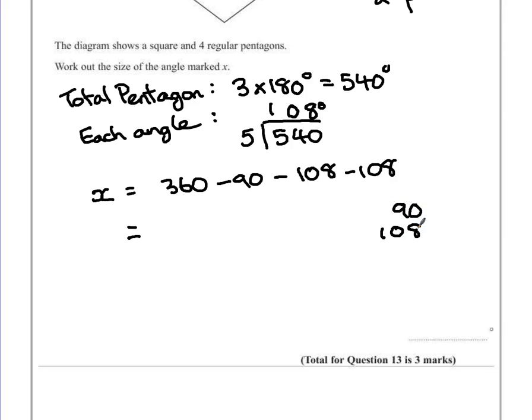So we have 90, 108 and 108. If we add those three values together, 8 add 8 is 16, 9 add 1 is 10. So we have 306 degrees, which technically means we have 360, take away 306, which leaves us with x being 54 degrees.